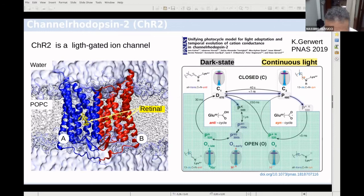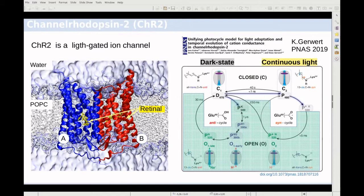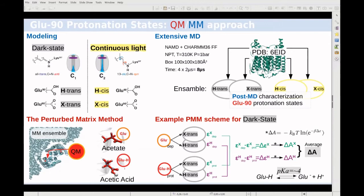In this continuous illumination, the double isomerization causes the retinal to form a stable state where the glutamic acid is deprotonated. To investigate this protonation state at the atomistic level, we modeled the full system.